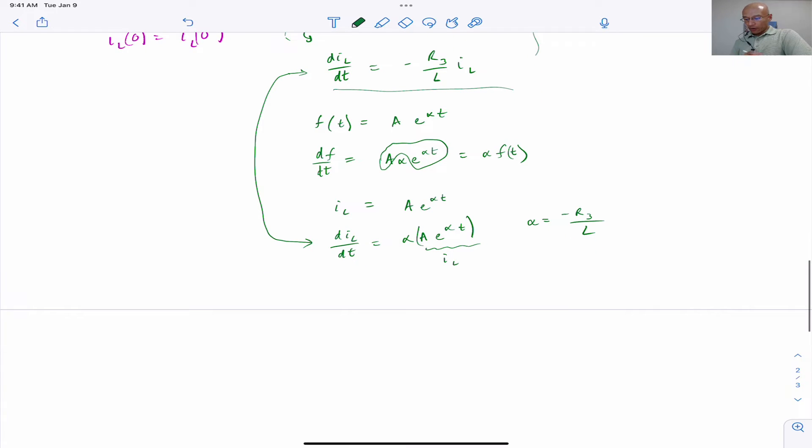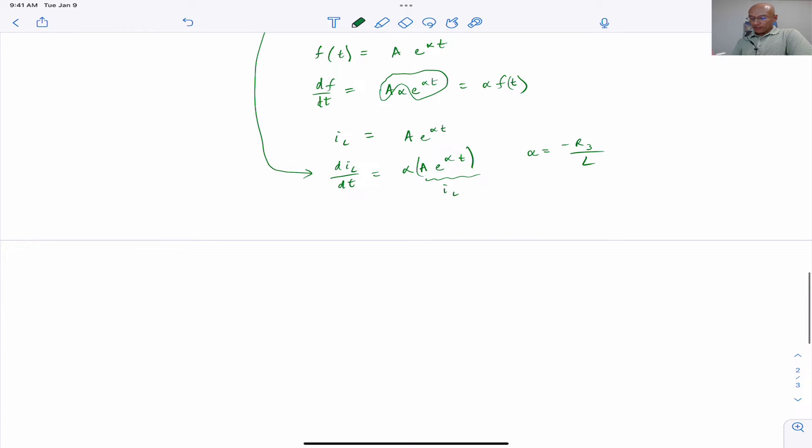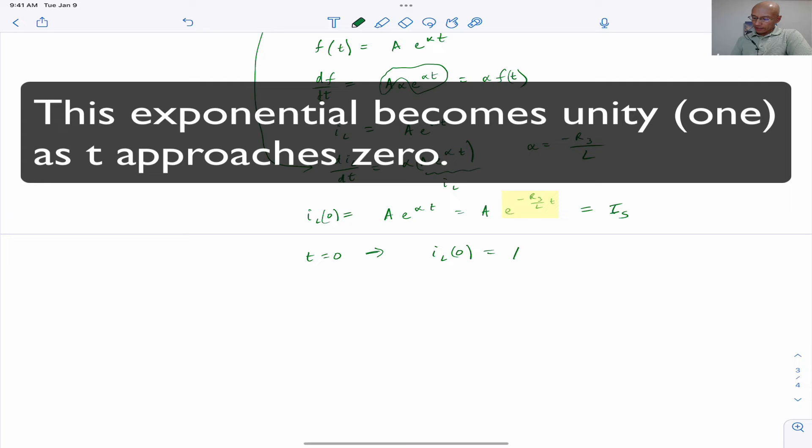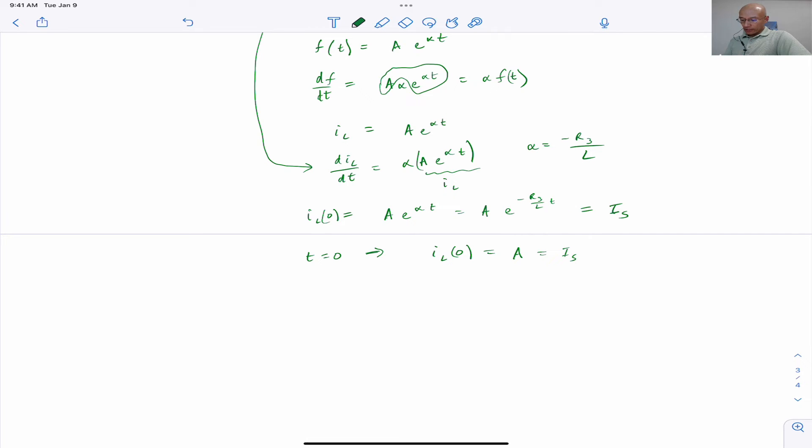And the other thing is, well, we don't know what a is, and so how do we figure that out? Well, we use the initial and final conditions. So basically, we need IL(0). So we know that much, and it needs to be IS. So if we plug in t equals 0 here, we're going to get a, and then e to the 0, right, because t is 0. That's 1, so we're just left with a. So we just learned that IS is equivalent to a.